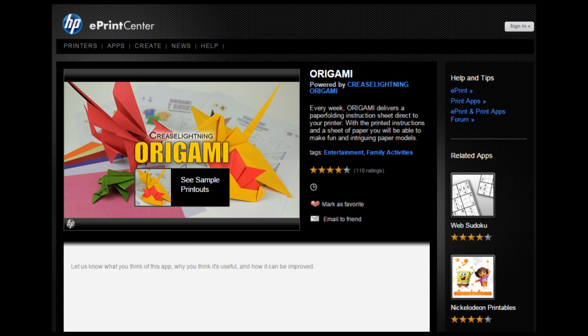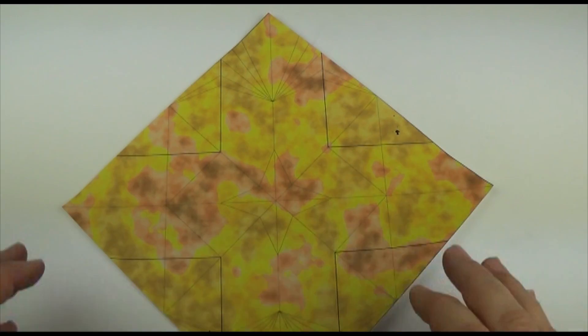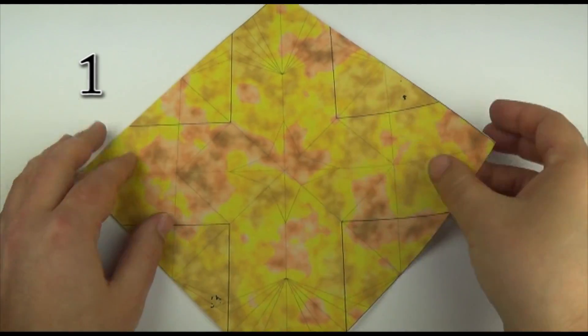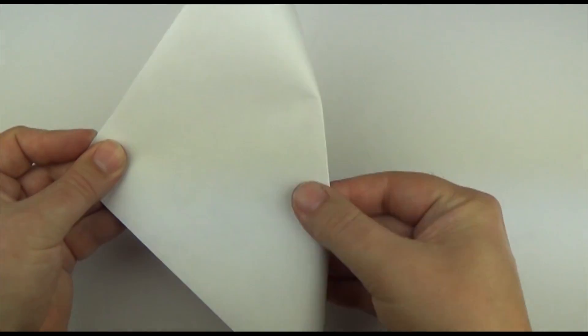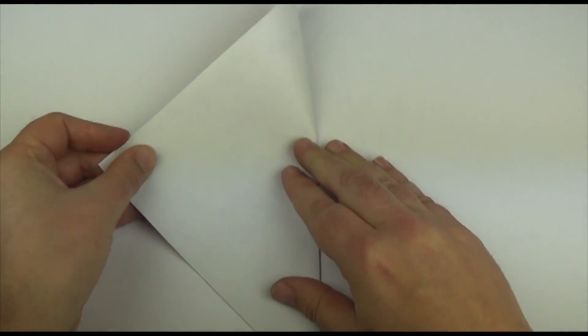Here are some instructions to make an origami bird. We're going to start with the square, colored side up, and we're going to fold it in half diagonally. So the two corners fold together, and crease.